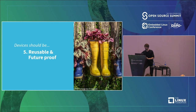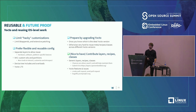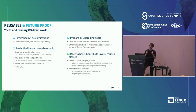Moving to our last part: making it reusable and future-proof. Limit hacky customization in your Yocto distro — limit the number of bbappends and extensive patching of components or recipes. If you're doing that, it probably means something is really wrong or that code should be contributed back. This is going to make your life harder as packages and recipes evolve, break things, and be a pain to maintain.